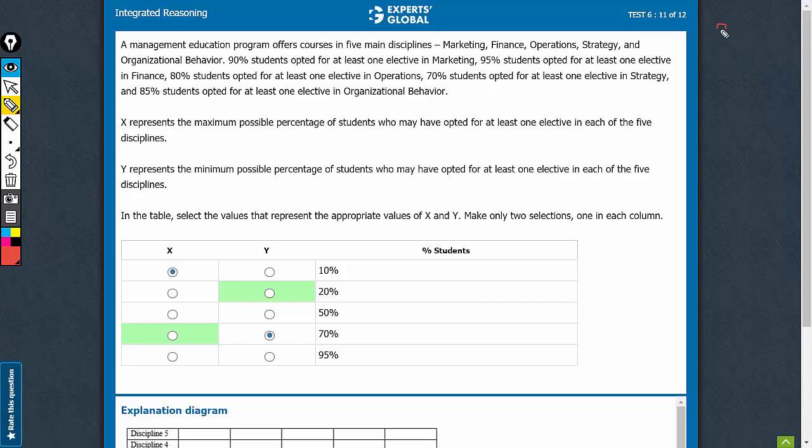The values here are 90%, 95%, 80%, 70%, and 85%. So the maximum possible overlap, x represents the maximum possible percentage of students who may have opted for at least one in all five.